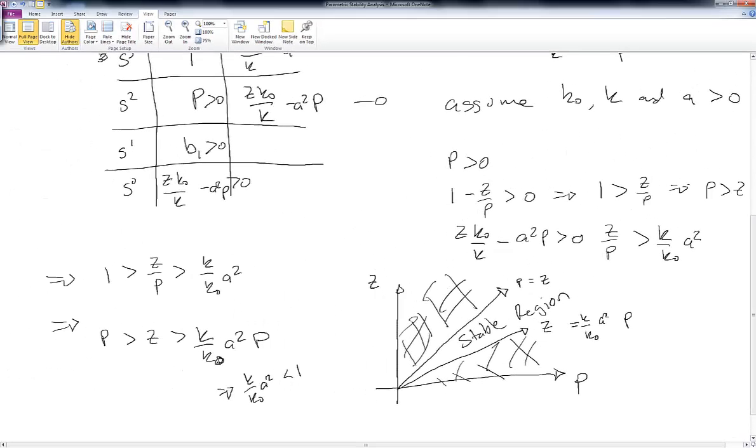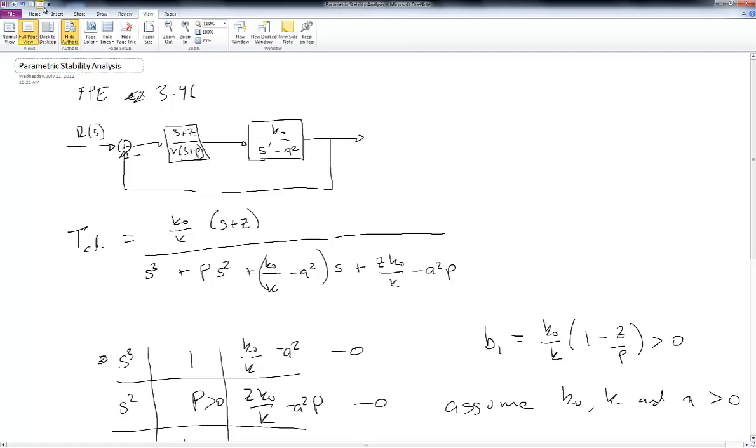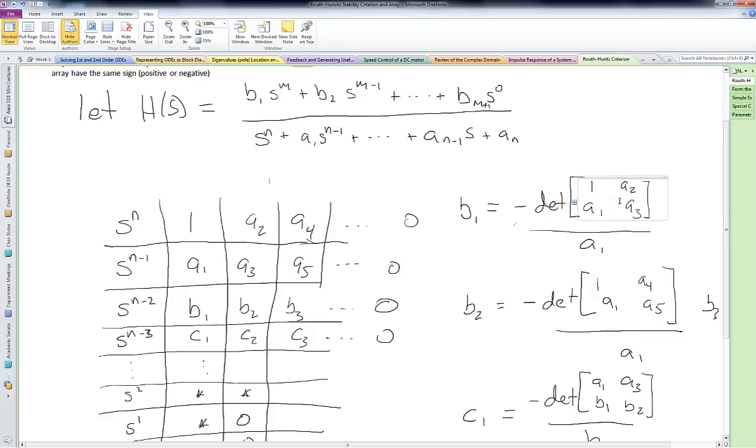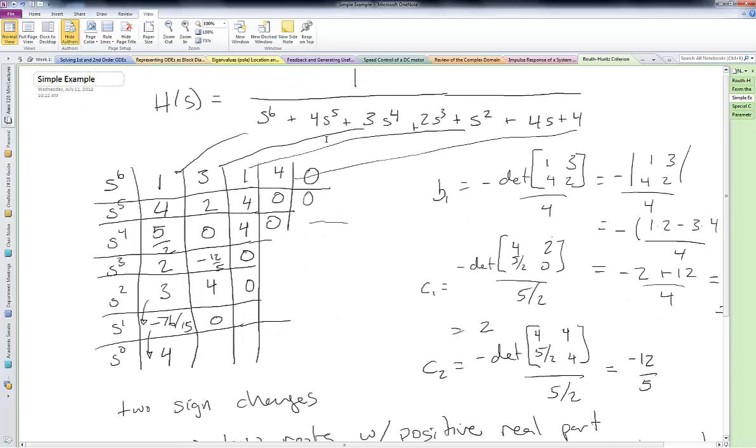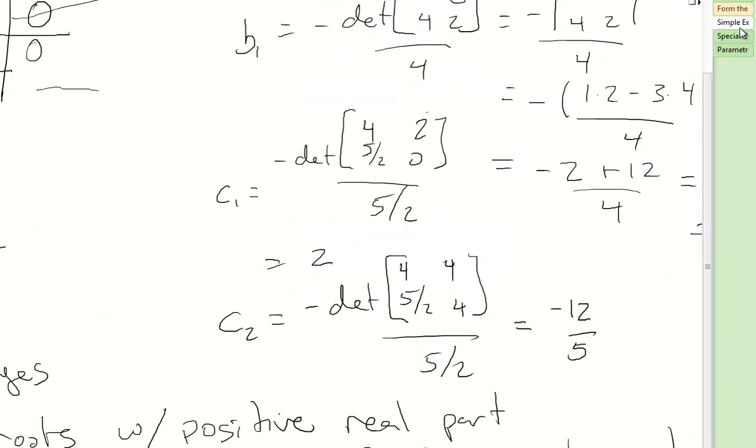And we can form these kinds of diagrams for all sorts of different parameters for all sorts of different problems. So to summarize, the Routh-Hurwitz criterion is a way to look at stability given the Routh array. And we can do simple examples where we have the coefficients and we don't necessarily want to calculate the roots, although this is a fairly trivial thing to do now with MATLAB.